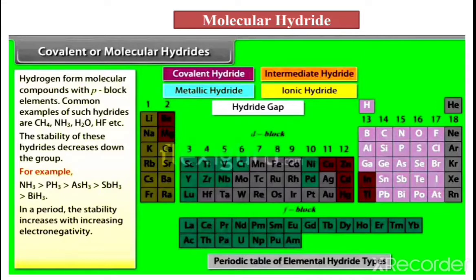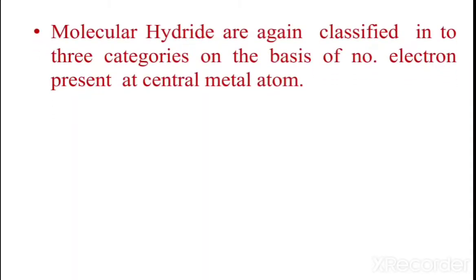A simple trick to remember group and period: HP — Horizontal Period; VG — Vertical Group. So HP upon VG: horizontal period, vertical group. This is a simple trick to remember the difference between period and group.